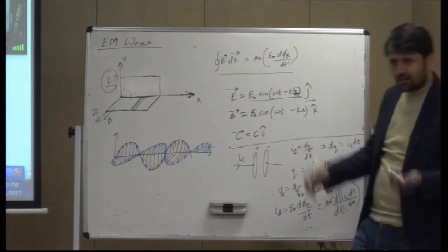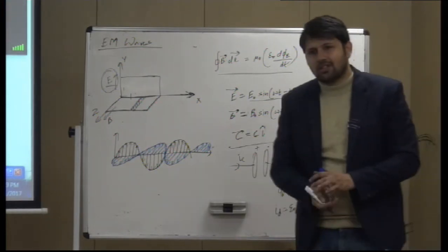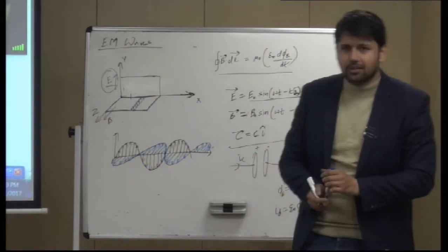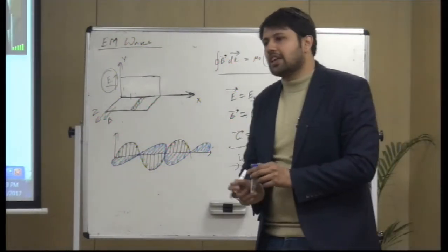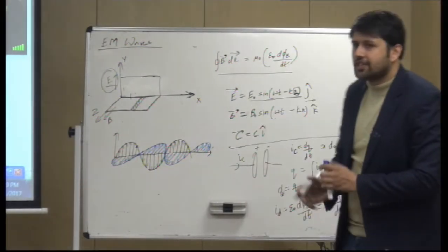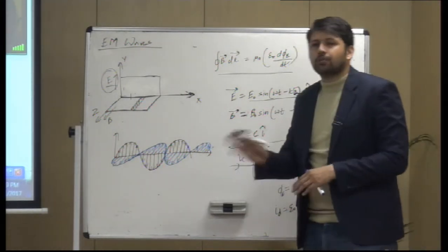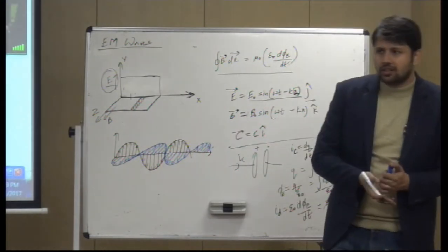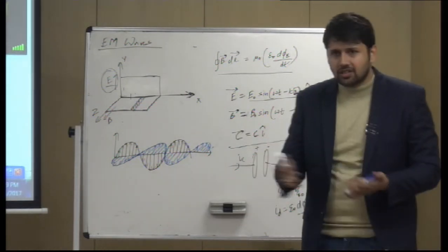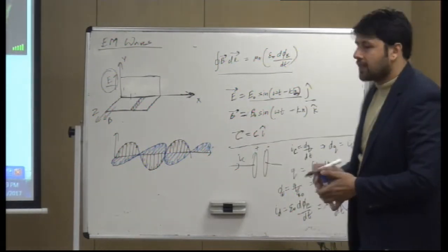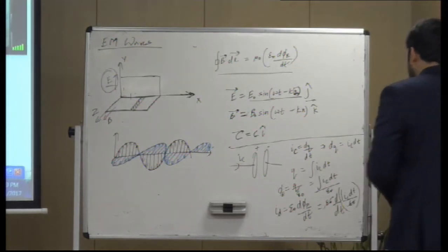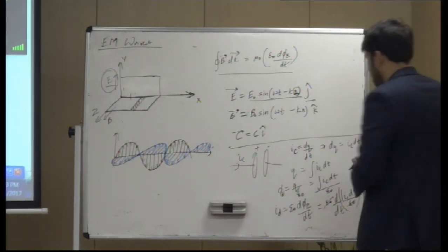They would always be equal at any point of time, because if they are out of phase, it means at one point of time I_c would be more and I_d would be less. But values may change — they would be equal at all times.